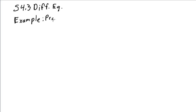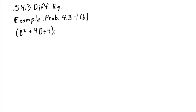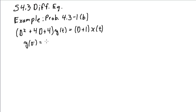This is Problem 4.3-1b. In operator notation, the differential equation is (d² + 4d + 4)y(t) = (d + 1)x(t). We're given initial conditions y(0⁻) = 2 and y'(0⁻) = 1, and we want to solve this when the input is e^(−t)u(t).